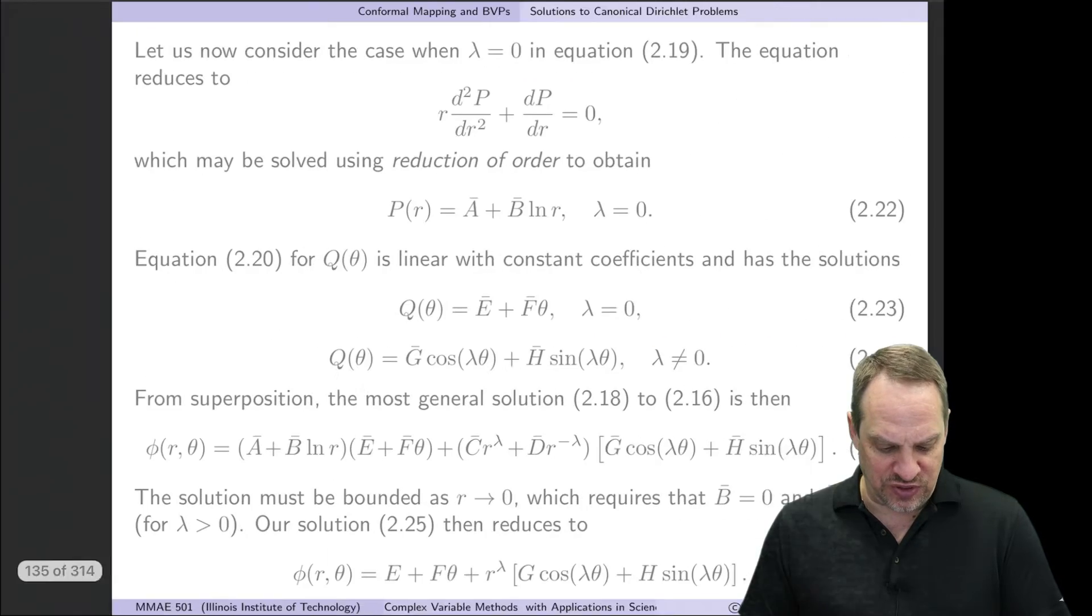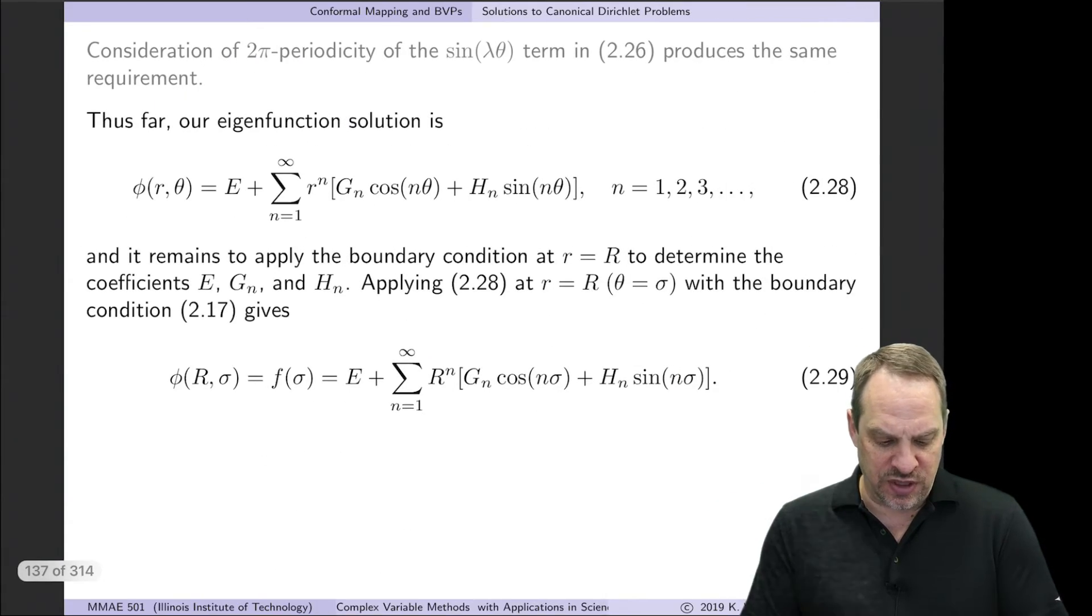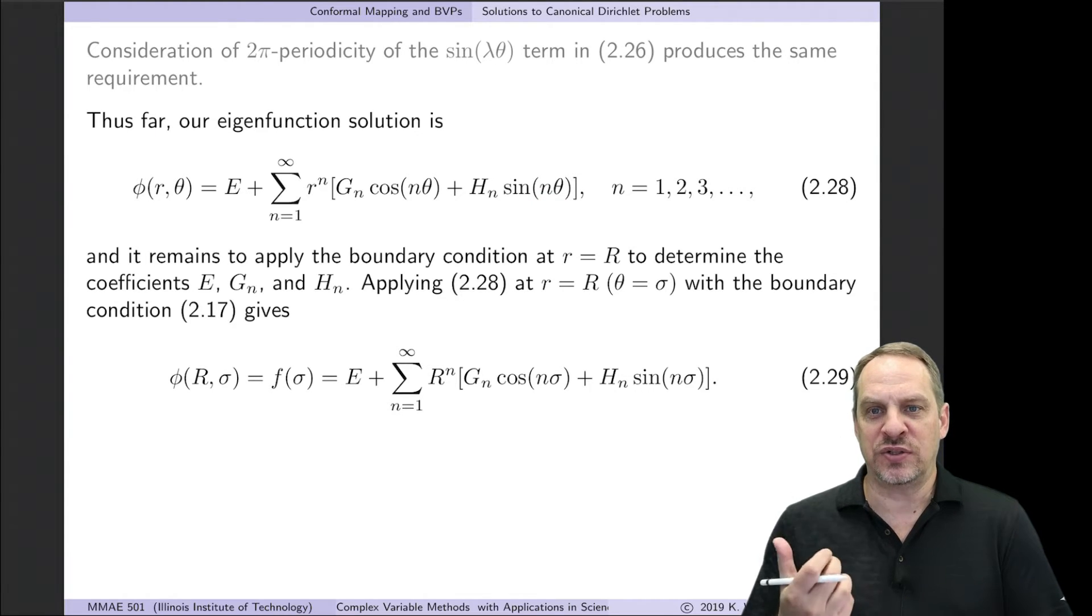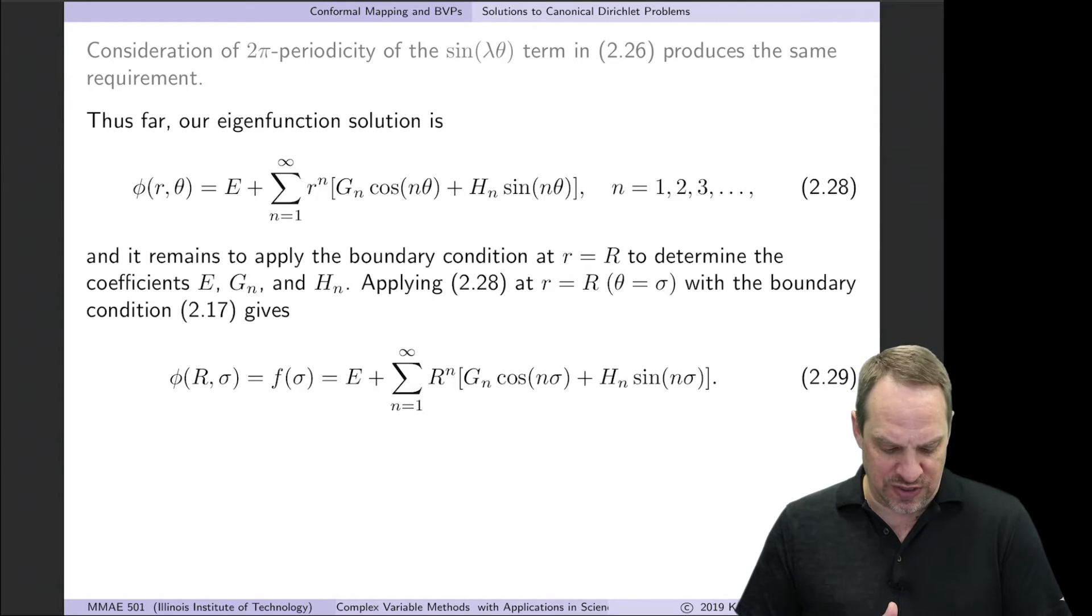Separation of variables typically results in an eigenfunction solution. In this case, it looks like this. You see you have r to the n's, where n's are integers, and we have cosines of n thetas and sines of n thetas. So it looks like it's related to a Fourier series. In fact, when we get the boundary conditions, you'll see that it is. When we apply this, when r equals capital R and theta equals sigma, so on the boundary, then the value of phi is f of sigma. Those are the boundary conditions.